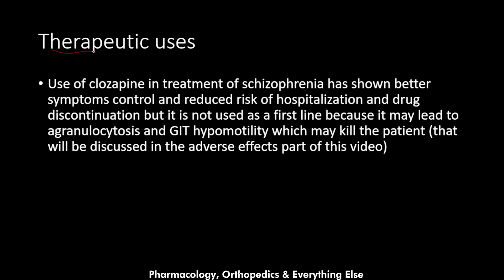Regarding therapeutic uses, clozapine has shown better symptom control, reduced risk of hospitalization, and reduced risk of drug discontinuation among schizophrenia patients compared to other antipsychotics. However, it is not used as first-line treatment because it may cause agranulocytosis and GI hypomotility, which can be fatal. These serious adverse effects prevent it from being first-line despite its superior symptom control.